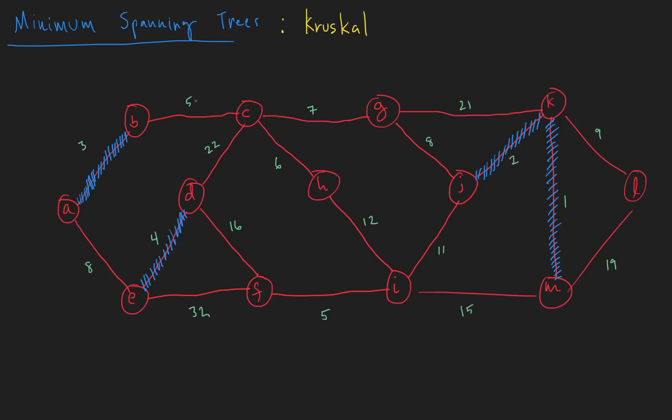Now we have two fives. We have a five here and a five here. So which one do we add first? Well, let's just say for the sake of argument that this came first in our sorted list of edges, just maybe because lexicographically the vertices come before these two. So let's add this one to the tree.